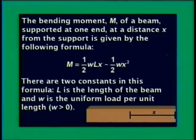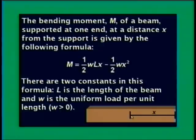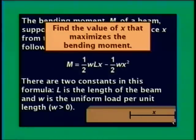Here's the final example. The bending moment m of a beam supported at one end at a distance x from the support is given by a formula involving constants w (uniform load per unit length) and l (length of the whole beam). We want to find the value of x that maximizes the bending moment — we need the x-coordinate of the vertex. This problem has no numbers, only letters and factors of one-half.